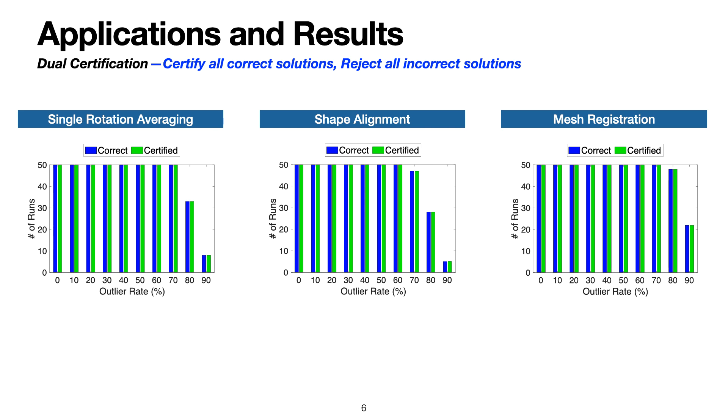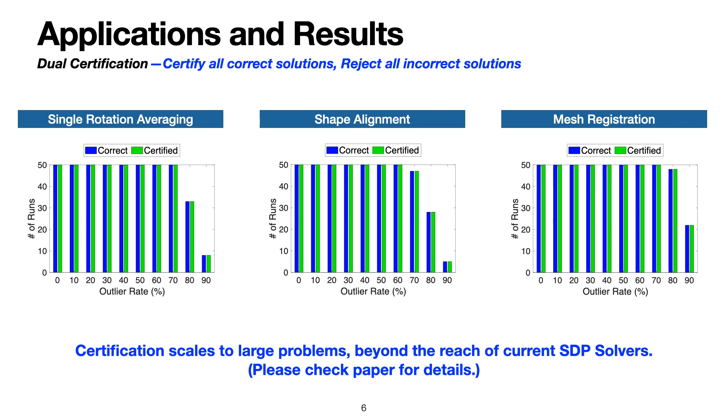Now, I show the performance of dual certification. Blue bars plot the frequency of when the fast heuristics returns correct estimates, and green bars plot the frequency of when certification returns an optimality certificate. We see dual certification certifies all correct solutions and rejects all incorrect solutions. Moreover, certification scales to large problems beyond the reach of current SDP solvers.